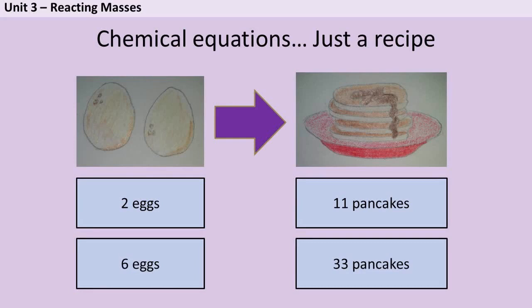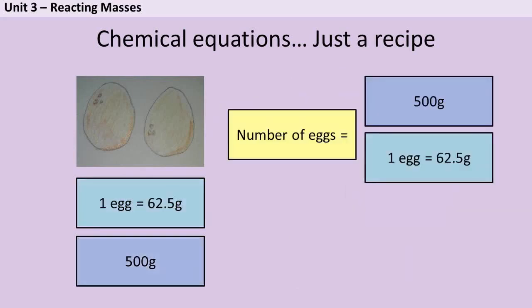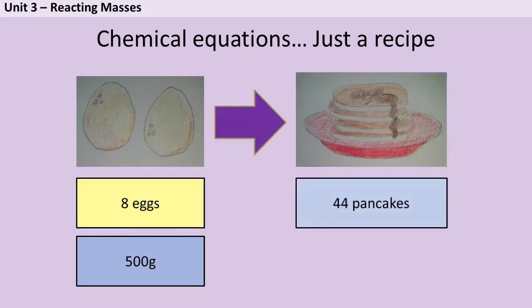But let's say I was really unhelpful and I told you I would give you 500 grams of eggs. Well first of all you would need to convert that into a format you could actually use with your recipe. If you knew that an egg weighed 62.5 grams you could do 500 grams divided by 62.5 grams to find out I was actually giving you eight eggs. And then we can go back to our ratio 2 to 11 and you could use it to find out we would make 44 pancakes.